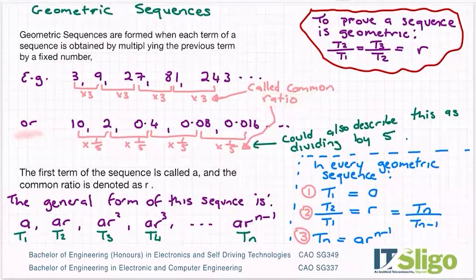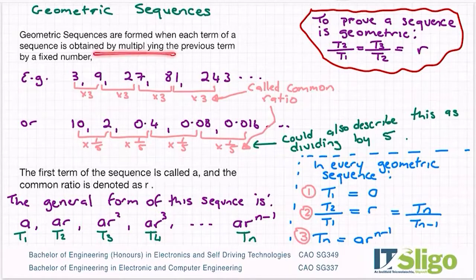Another sequence is from 10 to 2 to 0.4 to 0.08 to 0.016, so on and so forth. This can be described as multiplying by a fifth each time, or as I have it here in green, it could also be described as dividing by 5. Don't get too bogged up in it - it's either multiplying by a fifth or dividing by 5. Either way, it's the same thing. But if you look for a formal definition, it is multiplying the previous term by a fixed number.